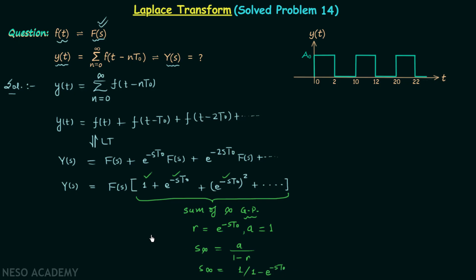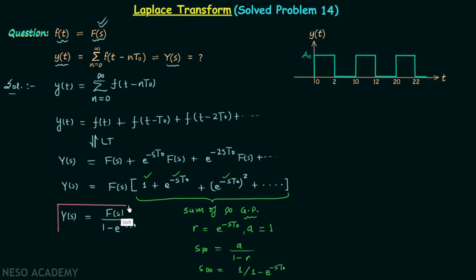We now have the value of the expression inside the bracket, and the only thing left is to multiply F(s) to get Y(s). So finally we get the Laplace transform Y(s) equal to F(s) divided by (1 minus e^(−st₀)). This is a standard result, so it is important to remember it because it can be used directly in certain questions. Now we will move on to an example where we will implement this result.